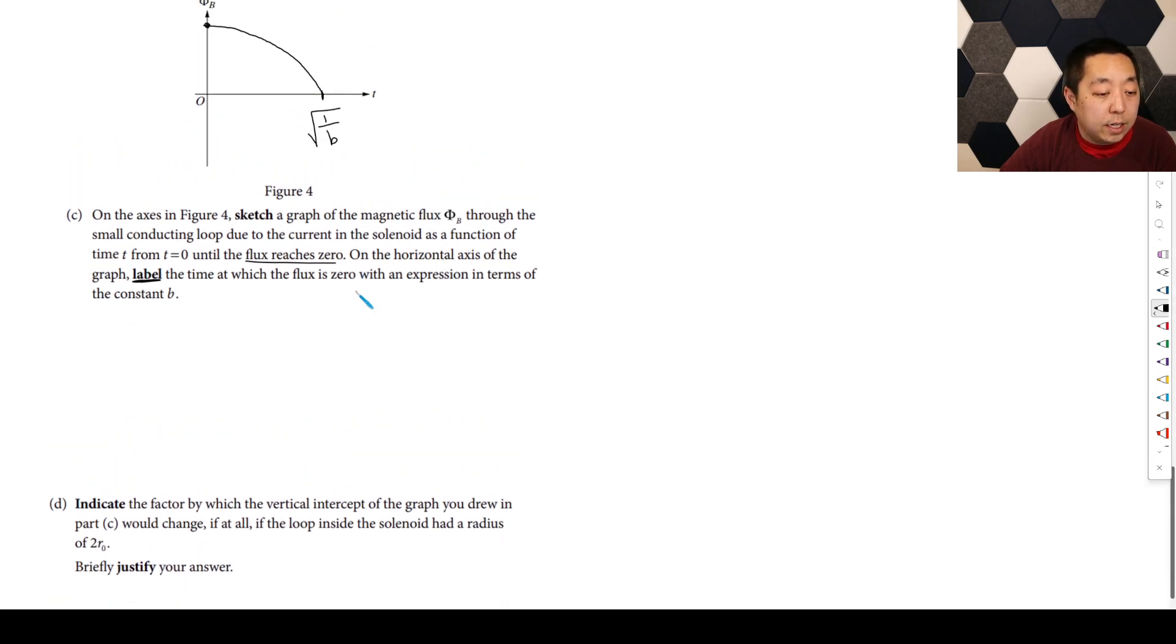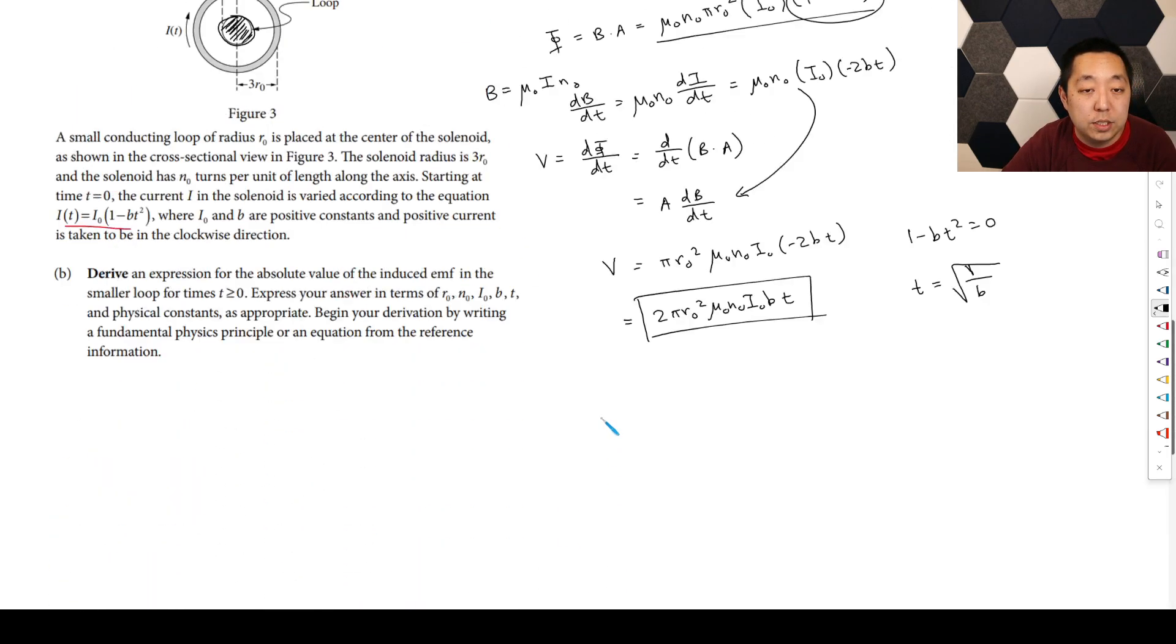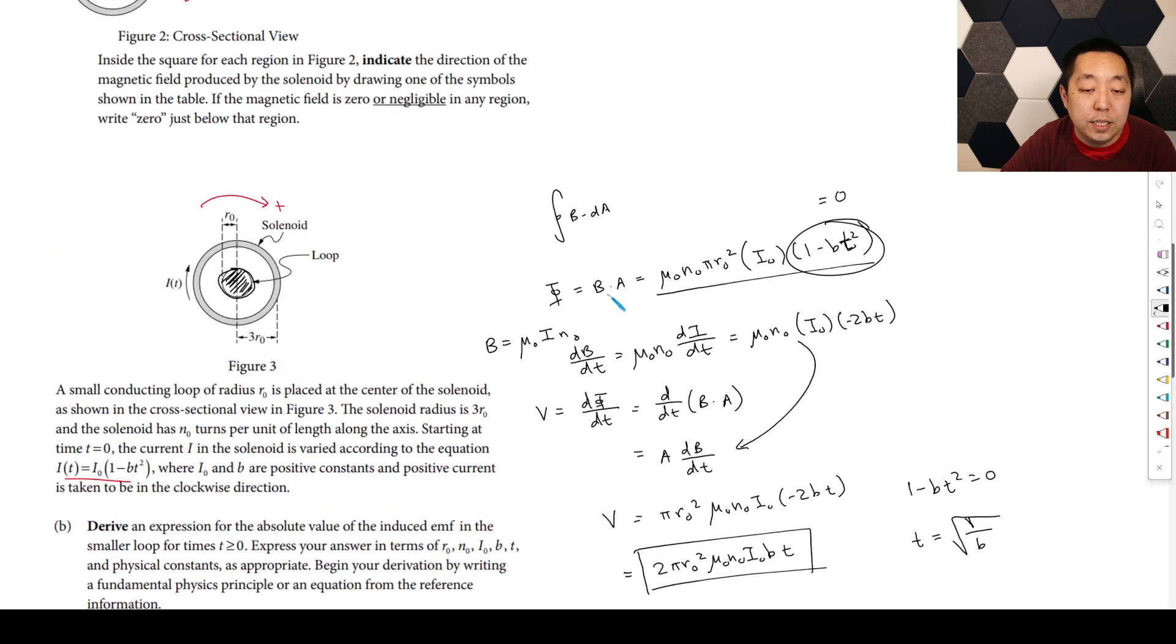Indicate the factor by which the vertical intercept of the graph you drew in part C would change, if at all, if the loop inside the solenoid has a radius of two R zero. Briefly justify your answer. Well, so the flux, if we look at our expression for the flux, it was B times the area. So the magnetic field part isn't changing. That part's staying the same because it's pretty uniform in the solenoid. So we're just doing the area. If I double the radius, this is going to be times four the area.